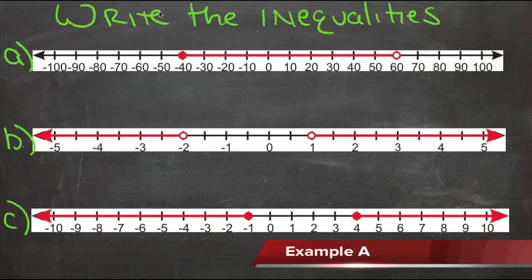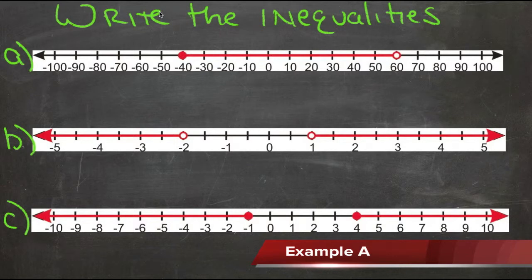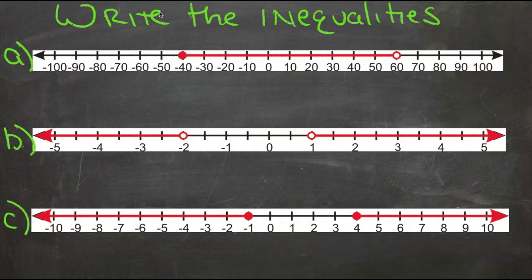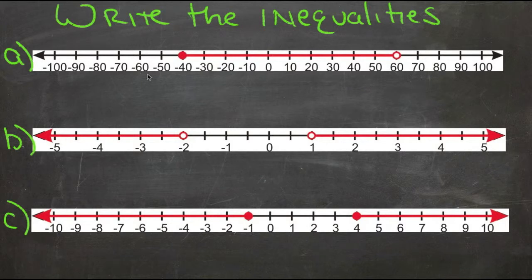Compound inequalities are inequalities where the variable amounts are either between two other values or greater than one and less than another. In other words, it's really two inequalities in one statement.